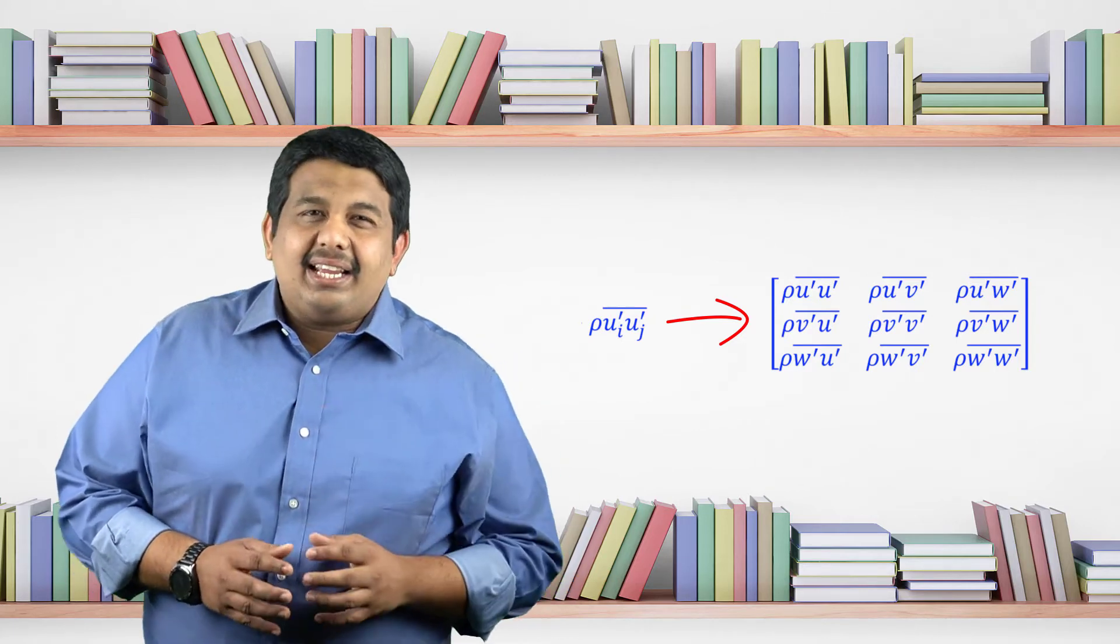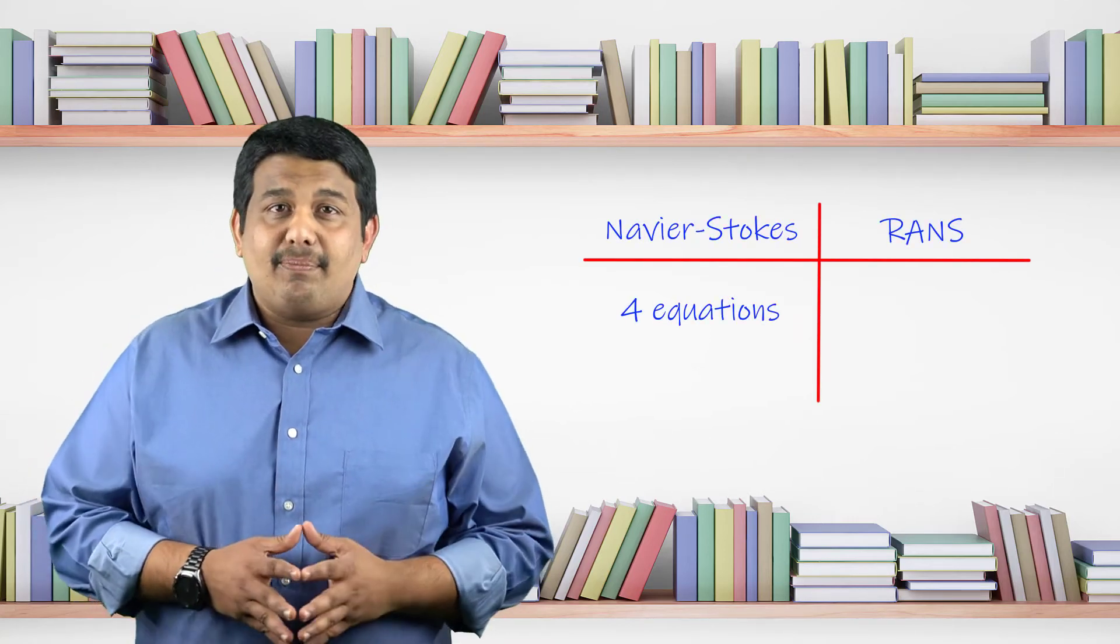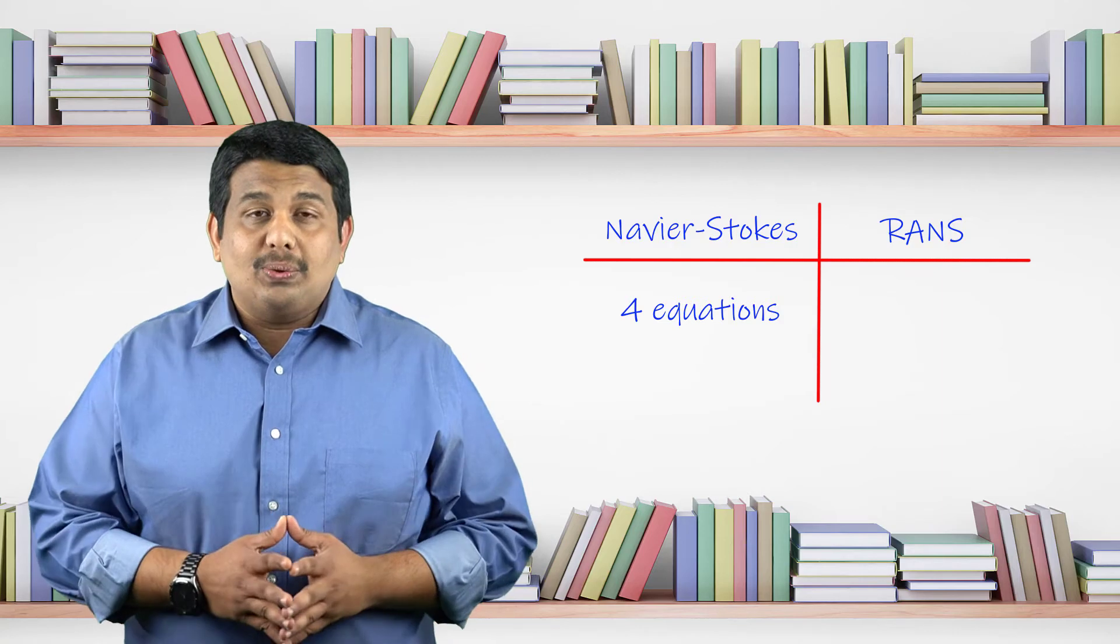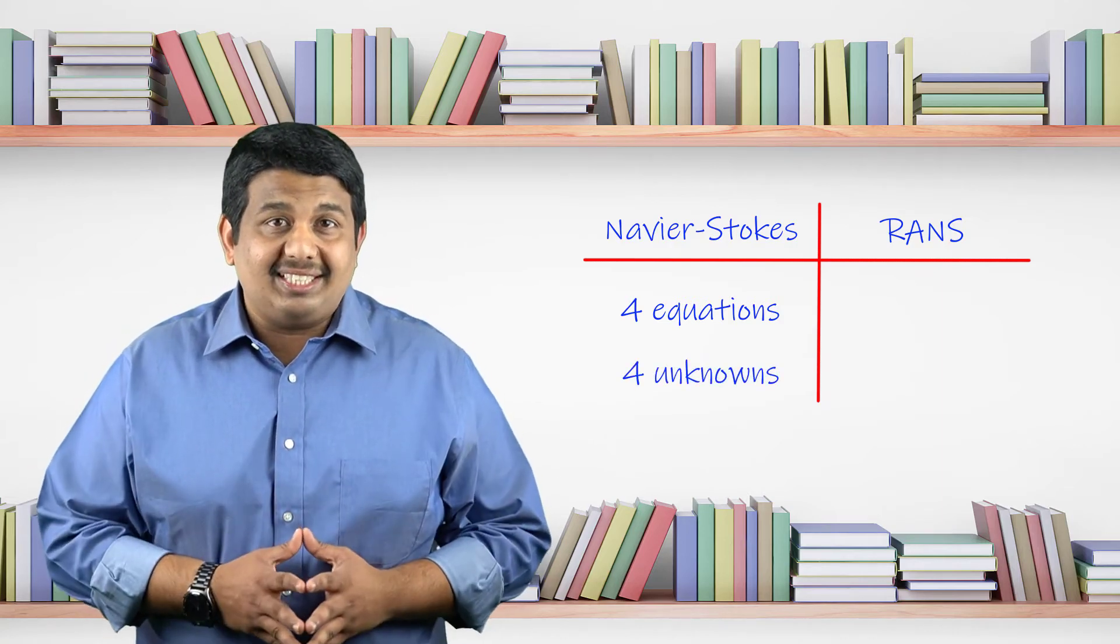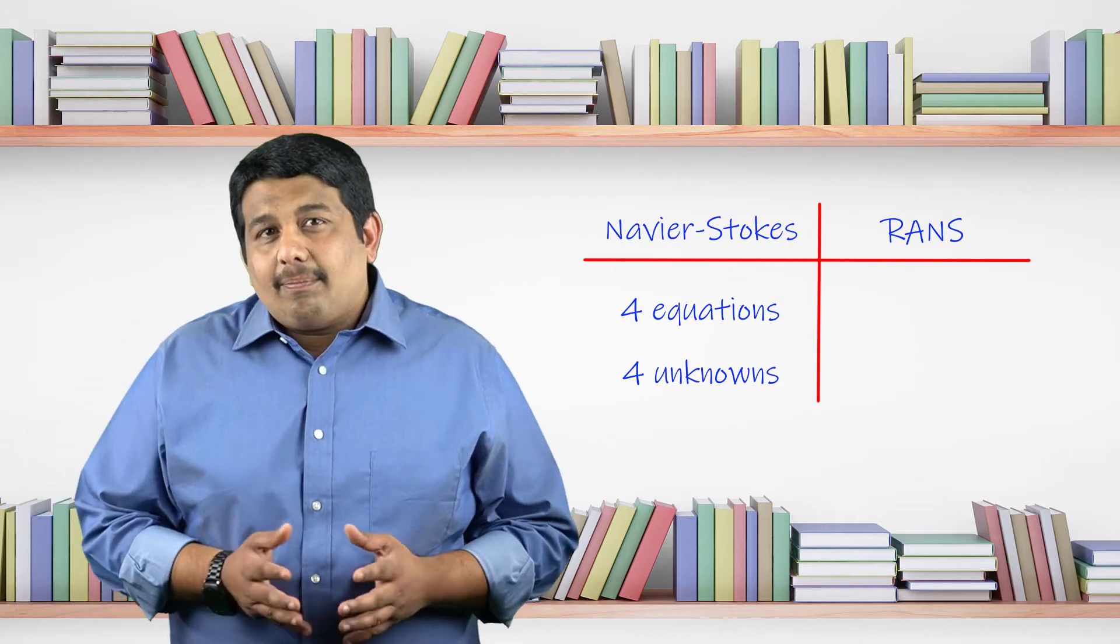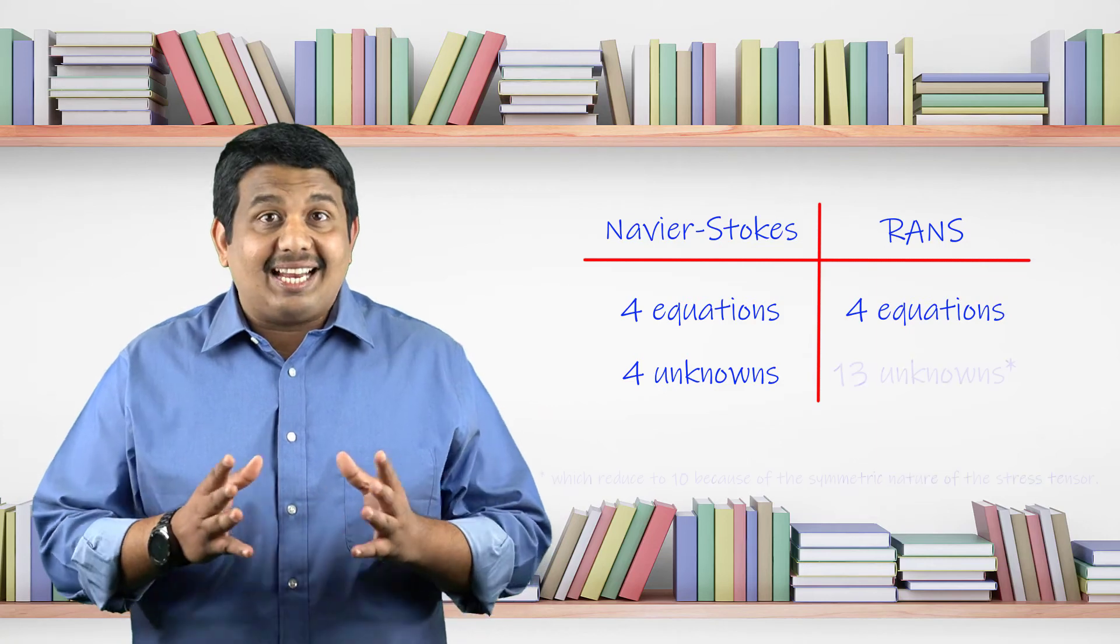Let us take a step back now. Starting from the incompressible Navier-Stokes equations, where we had 4 equations, 1 for continuity and 3 for momentum, for 4 unknowns i.e. pressure, u, v and w components of velocity, we ended up with 4 equations with 13 unknowns after time averaging.